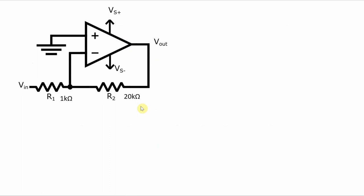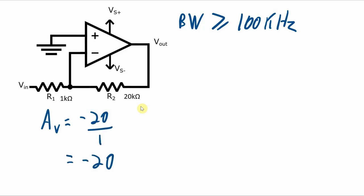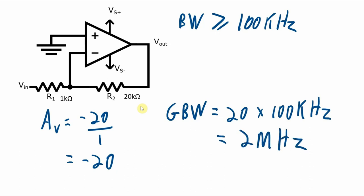Here's a second example. So let's say we need to design this circuit and the bandwidth that we need has to be at least 100 kilohertz. So what gain bandwidth product would we need for the op amp that we use in this particular circuit? For this circuit, it is an inverting amplifier, and the gain is negative 20 over 1. So it's a gain of negative 20. The magnitude of the gain is then 20. So then the gain bandwidth product that we need is 20 times 100 kilohertz, which is 2 megahertz.